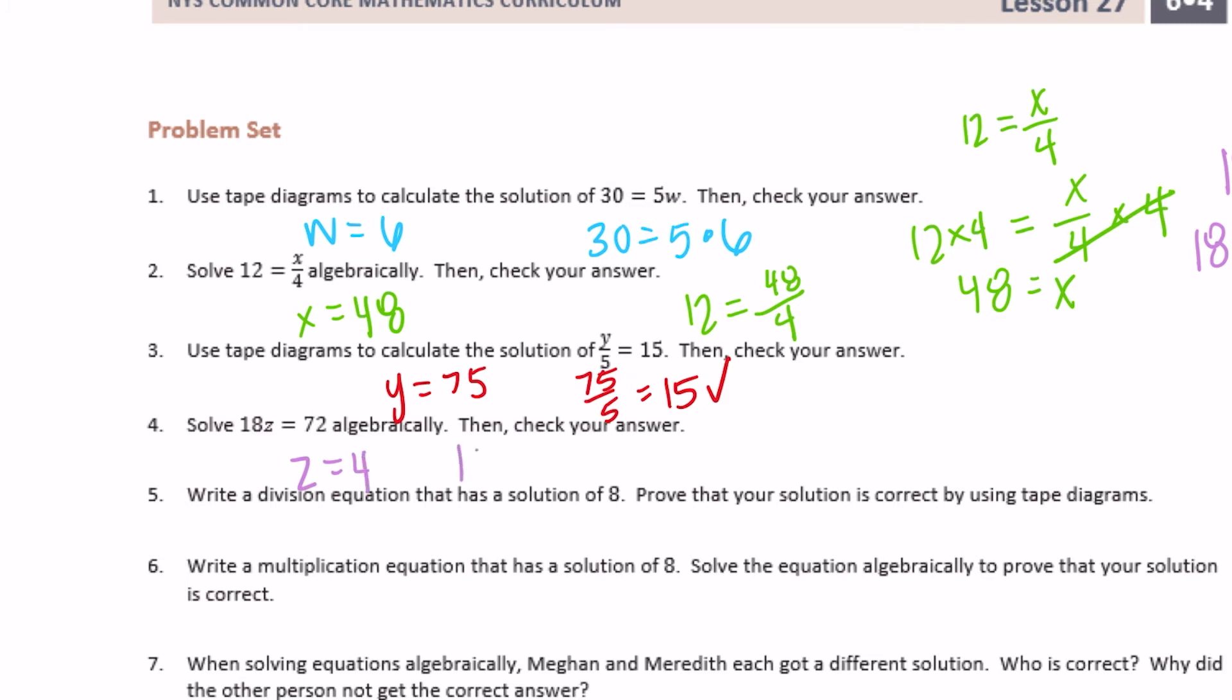And is 18 times 4 equal to 72? We can check real fast. It's 32, carry the 3, 4 times 1 is 4 plus 3 is 72.